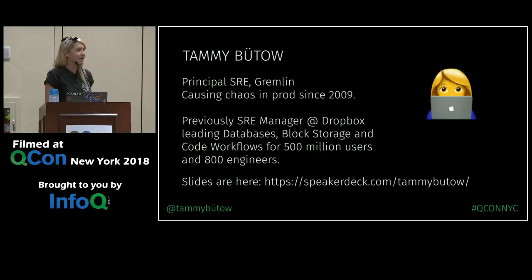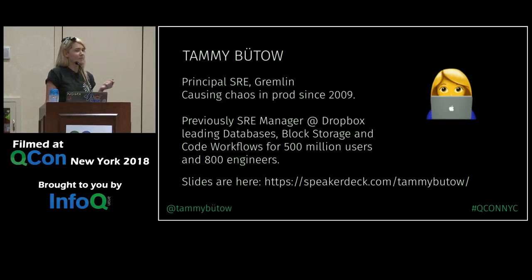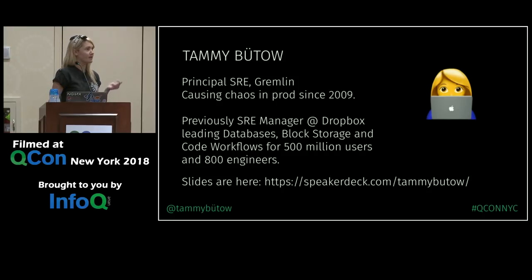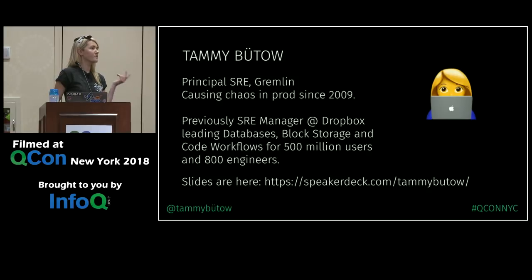The big thing with chaos engineering is you're not trying to impact the customer badly - you don't do dangerous things. You're trying to learn about your system and think a lot about blast radius: start small then gradually increase. I also led the code workflows team, all internal tooling for 800-plus Dropbox engineers, doing chaos engineering to make systems more reliable. I got a 10x reduction in incidents in three months and had a 12-month period with no high severity outages.